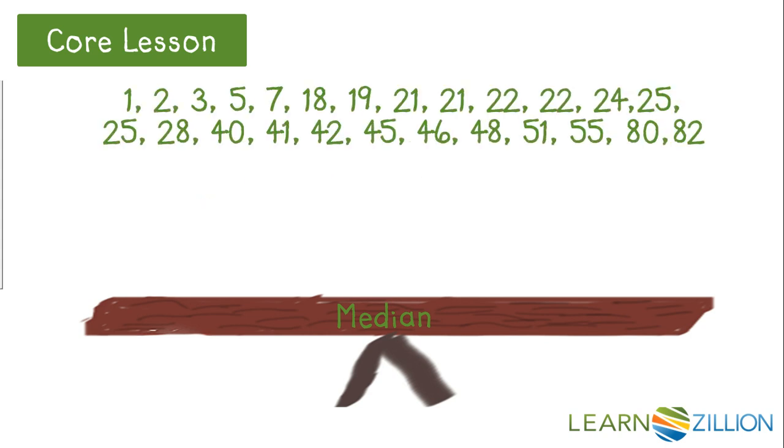Once the data is in order, I can work on finding the five number summary. I always start by identifying the upper and lower extremes, because they are easy. Now to find the median. I'm going to highlight 12 values from the beginning and 12 values from the end, leaving me with 25 in the middle, which is the median.